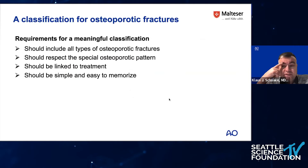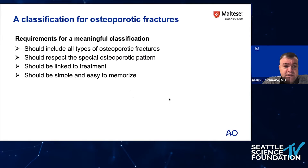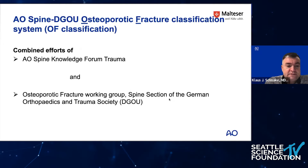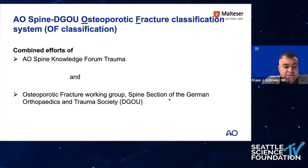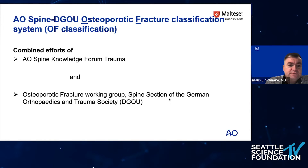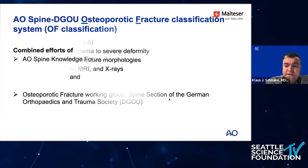Requirements for a meaningful classification are that it should include all types of osteoporotic fractures, respect the special osteoporotic patterns, be linked to treatment, and be easy and simple so everybody can memorize it. In a combined effort of the AO Spine knowledge from trauma and the osteoporotic fracture working group of the spine section of the German Orthopedic and Trauma Society, we developed the so-called AO Spine DGO osteoporotic fracture classification — or, in short, the OF classification.